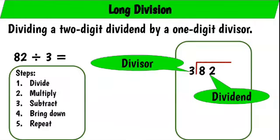So here we have our numbers placed in our long division symbol. Here we have our divisor 3 on the outside and our dividend 82 inside of the division symbol. Here we have our steps.